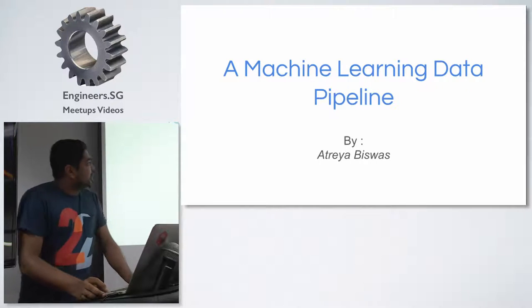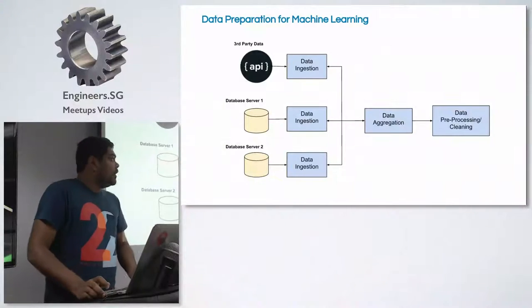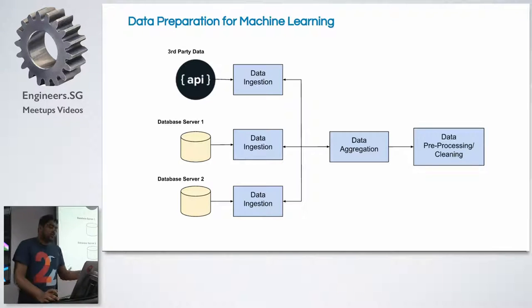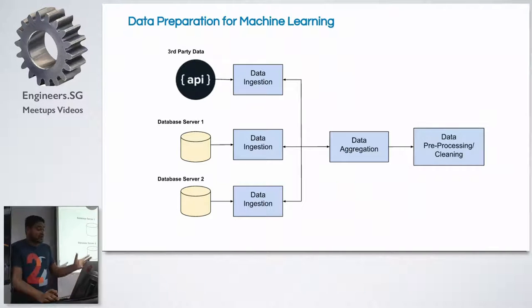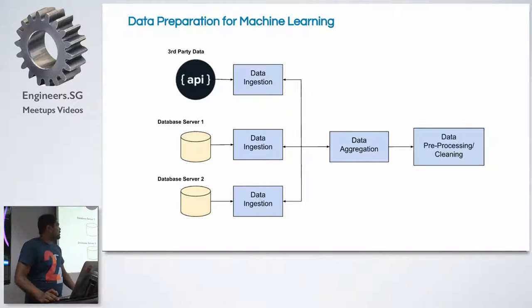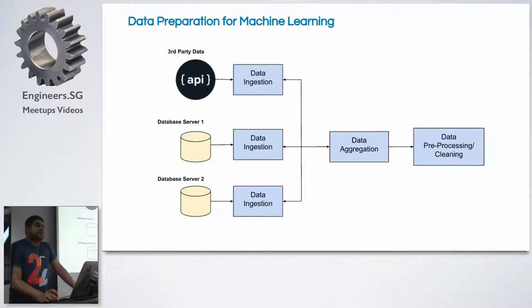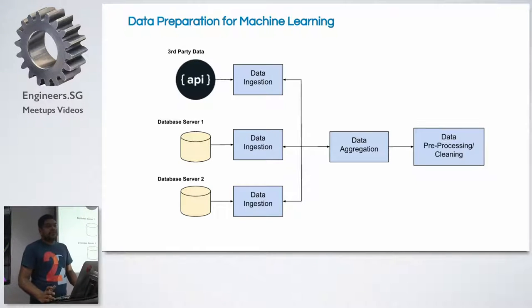For any kind of machine learning, the first thing that comes to mind is data. We think about a lot of data sources that exist in the world. A simple workflow for preparing data for machine learning — something our company uses — involves different kinds of databases, shown as database server one and server two, and also external APIs, both paid and free, to make sure the data is more enriched.